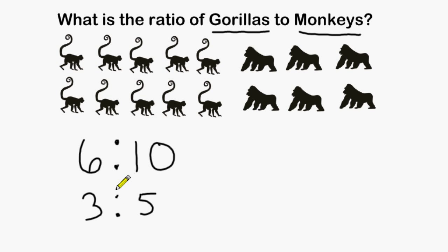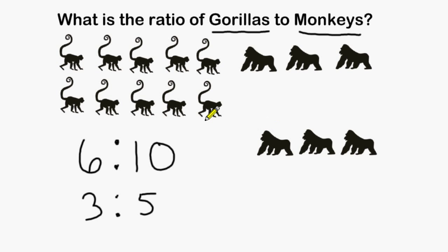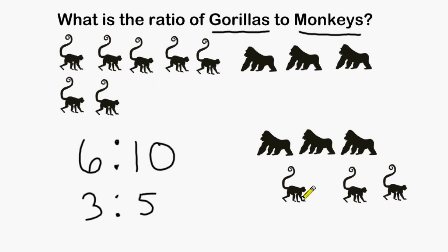So we can say that for every three gorillas there are five monkeys. We can even drag three gorillas on the side and then drag five monkeys on the side, and see if the groups that are formed have three gorillas for every five monkeys.